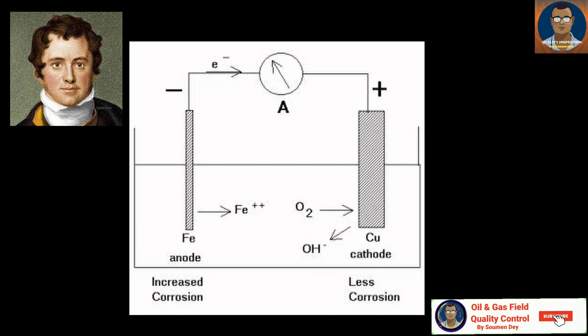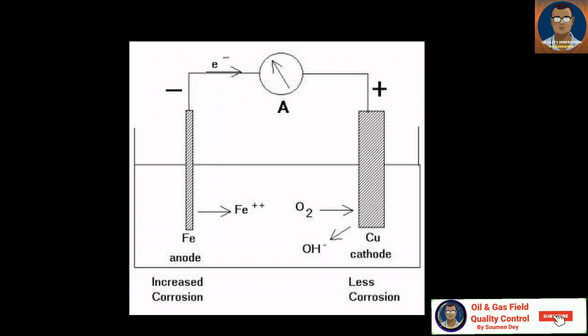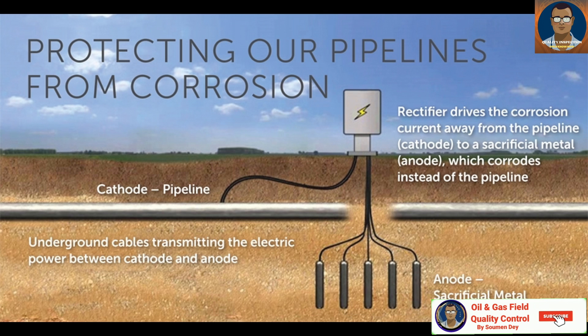Cathodic protection can be described as replacing lost electrons from an external source, thus changing an anodic area into a cathodic area and preventing corrosion. This leaves the pipe or area to be protected uncorroded, while a sacrificial anode gives up its life to protect the carrier pipe, ship, or whatever structure is being protected.